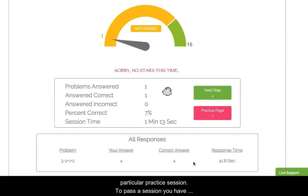Once they complete the problem set, they will be taken to a results page which shows them a summary of what they did and whether or not they passed that particular practice session. To pass a session you have to achieve 80% correct. In this case, that would mean you'd have to get 12 out of 15. From here, a student can decide to either go to the next step and continue practicing, or they can return to their practice page.